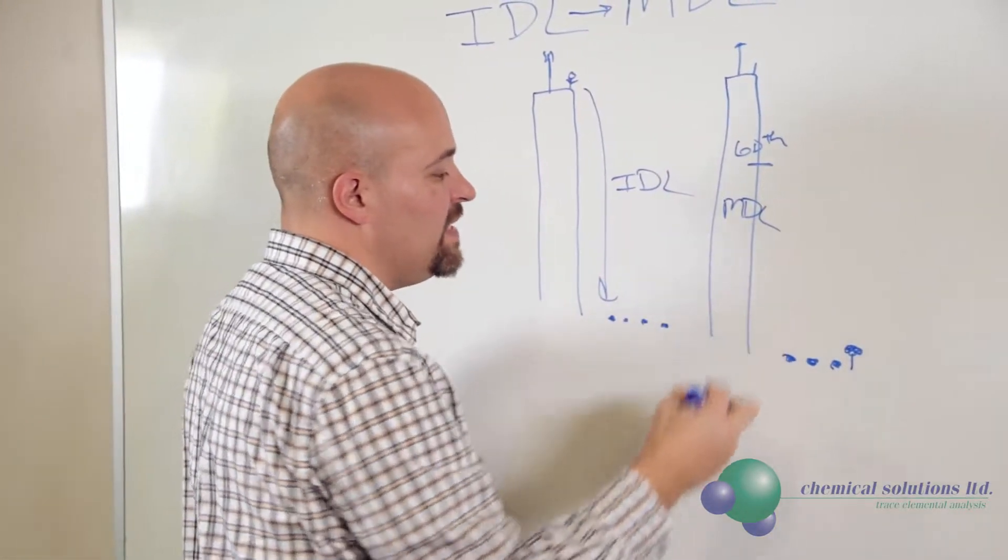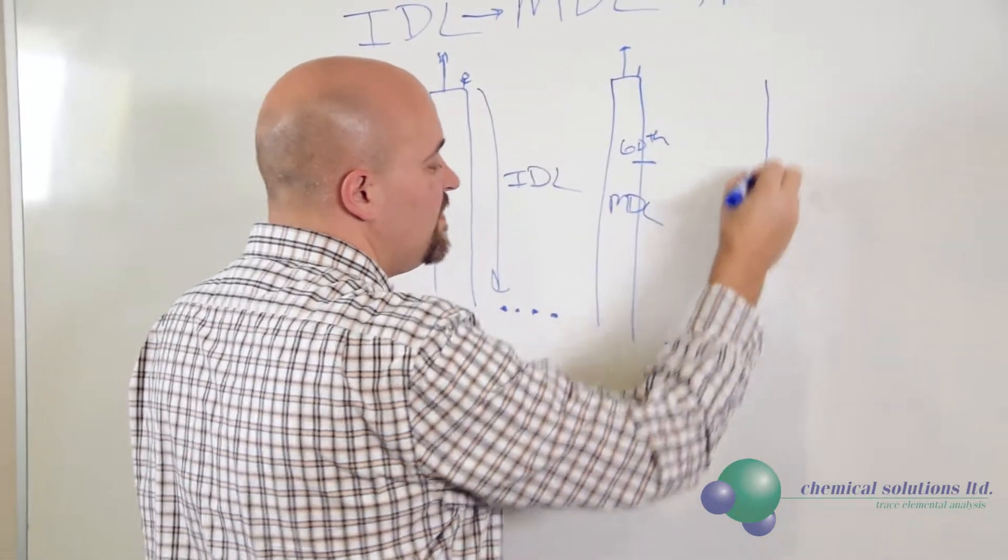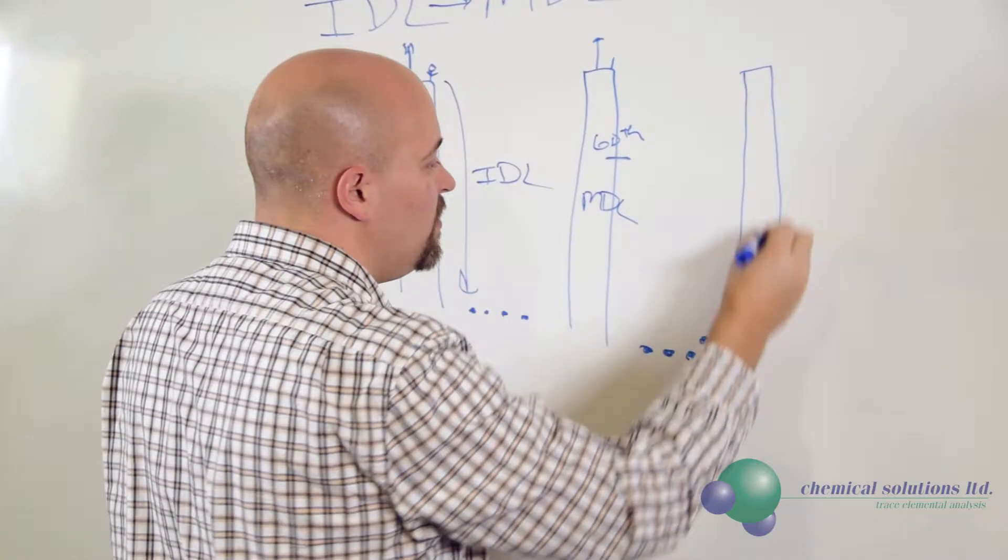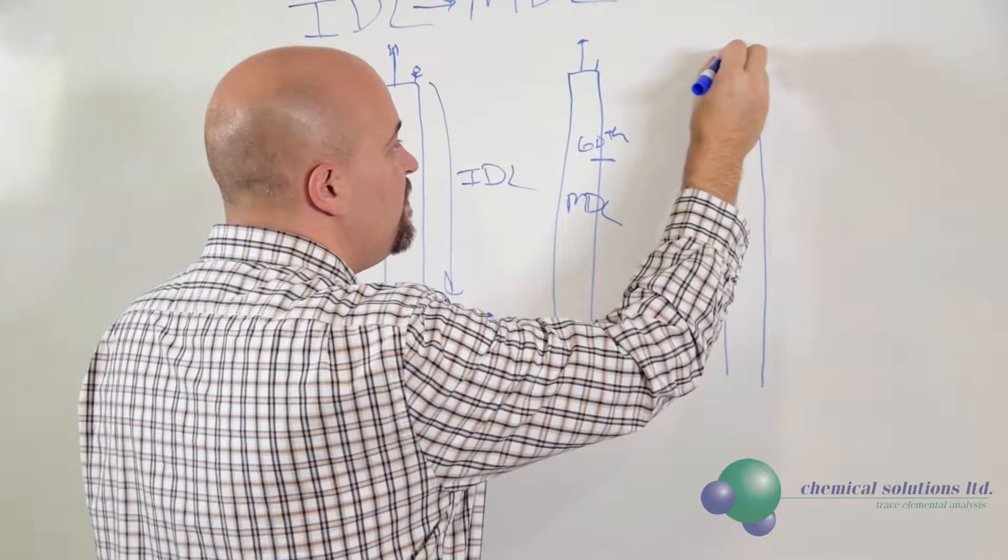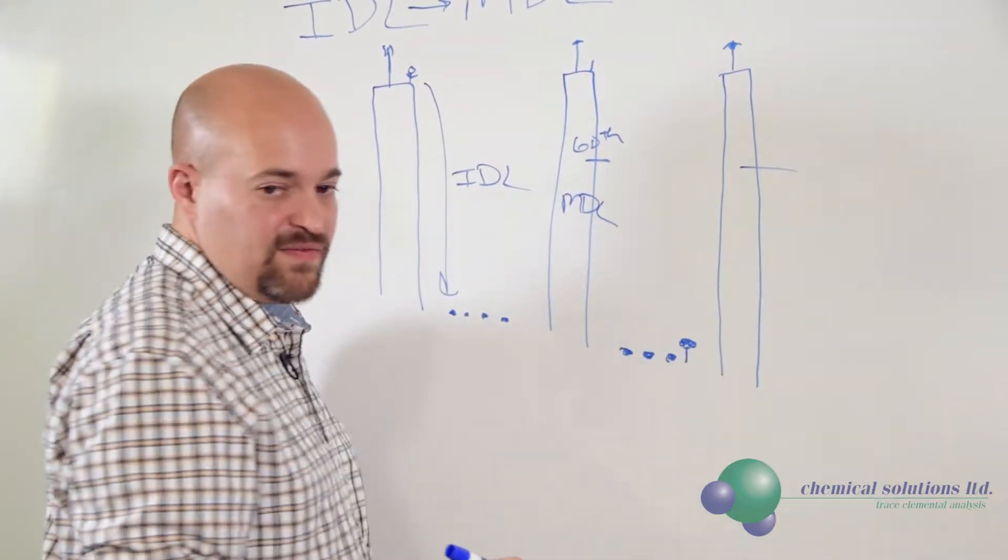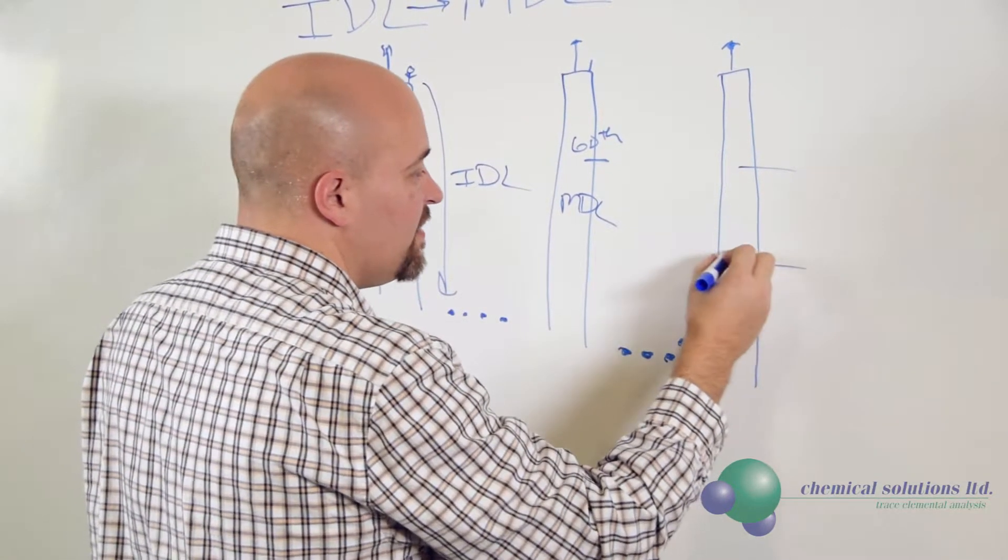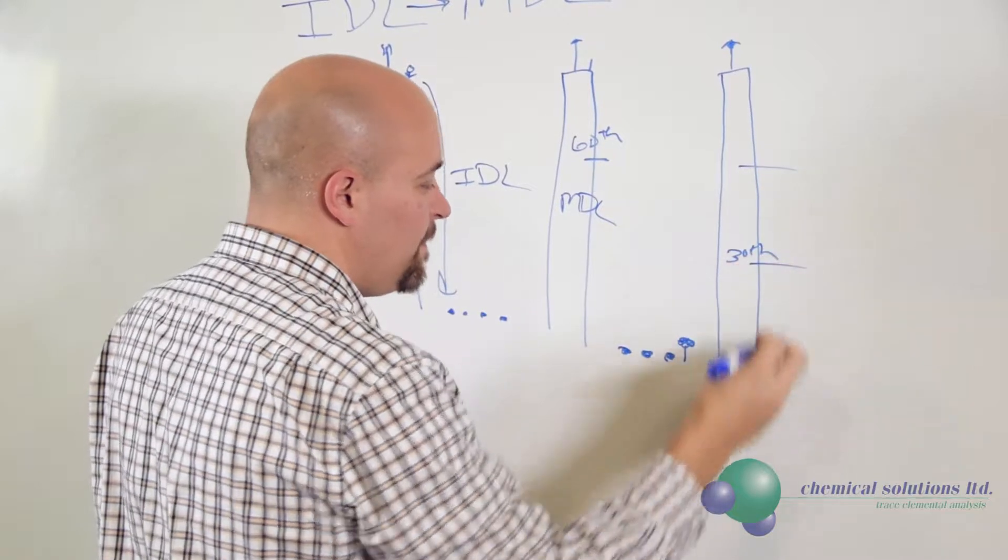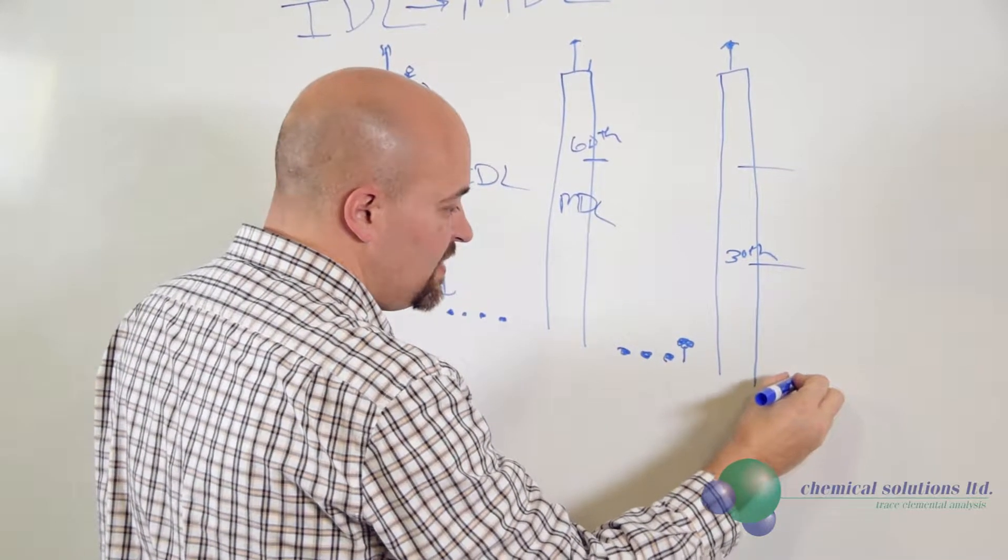So that would be sort of your MDL. The last concept would be your PQL. And again, you're at this same Empire State Building, but instead of being at the 60th floor, you're now down here at the 30th floor. And now you can start to see these people.